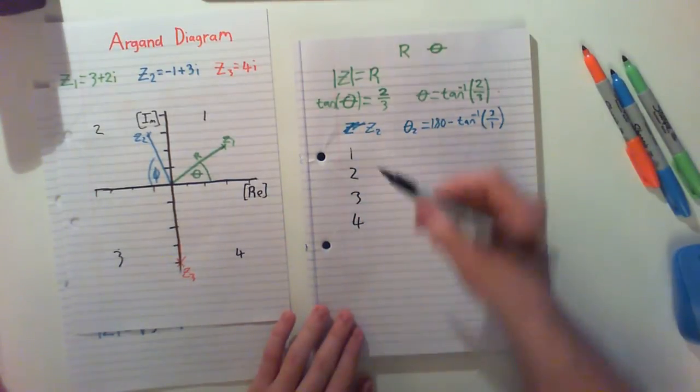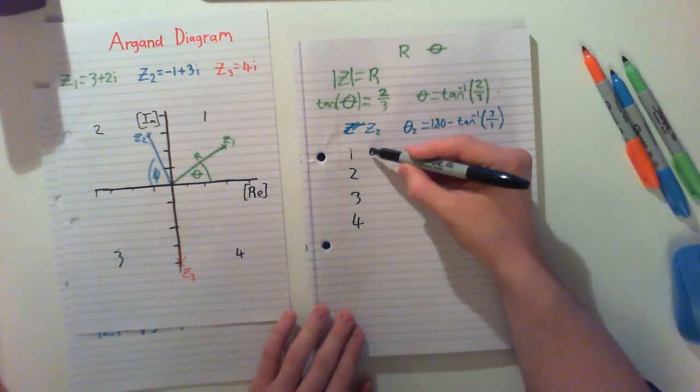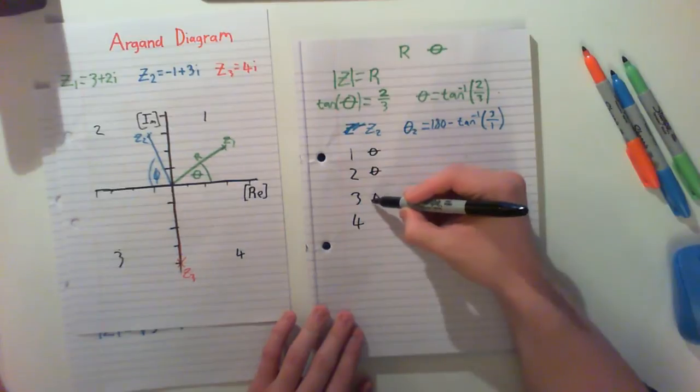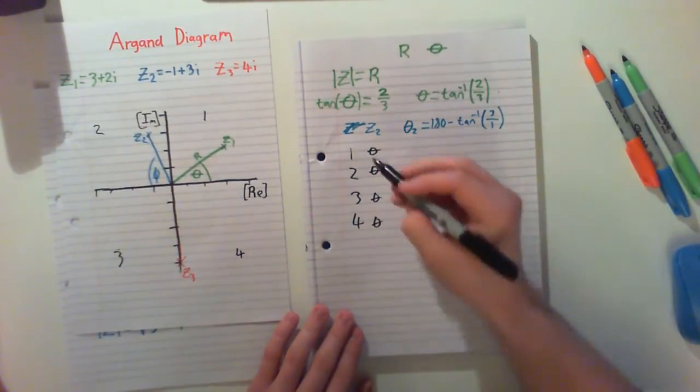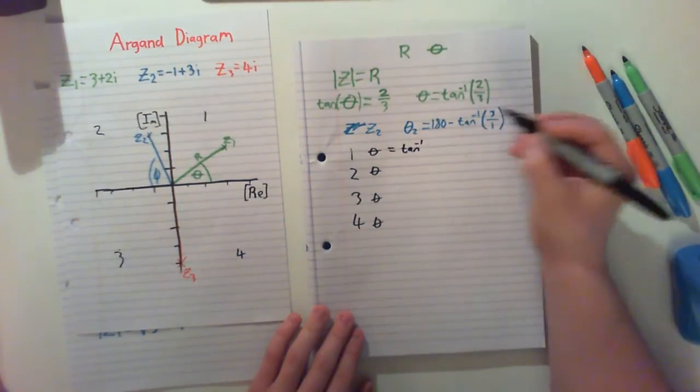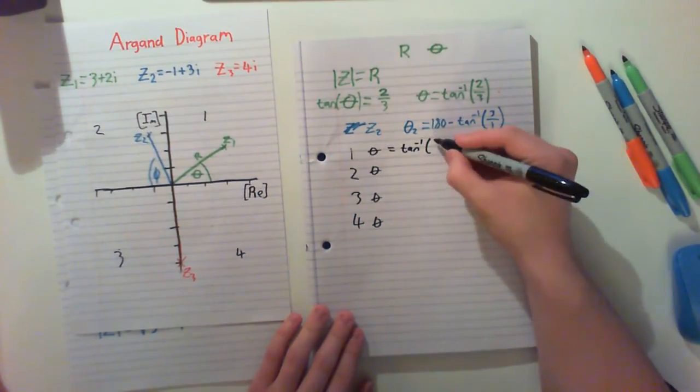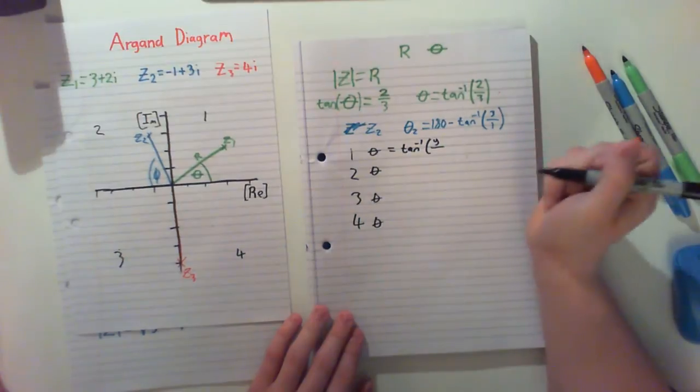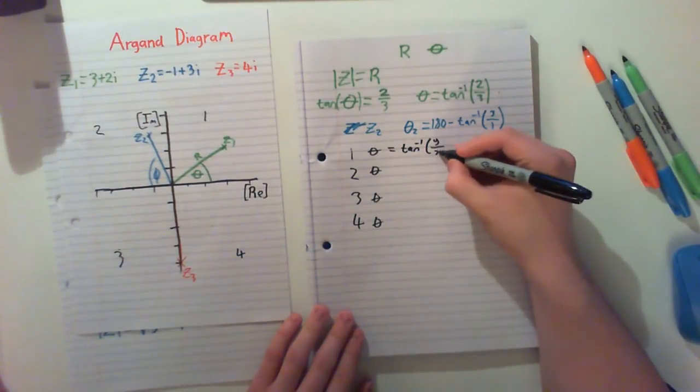And for the first section, our angle, we'll just do here. Our first section is just tan to the minus 1 of our y part, or our imaginary part, over our real part, which is our x part.